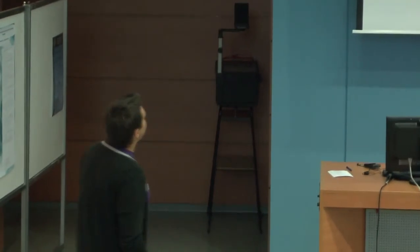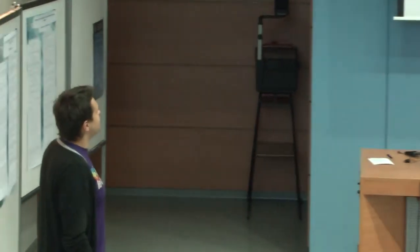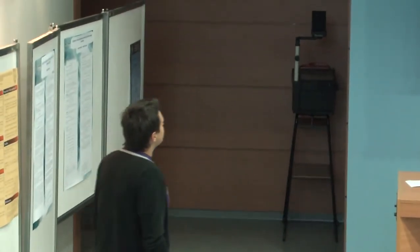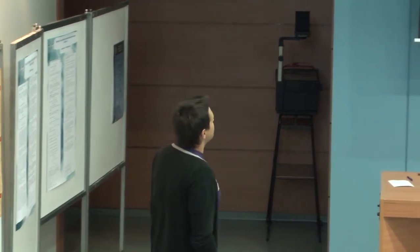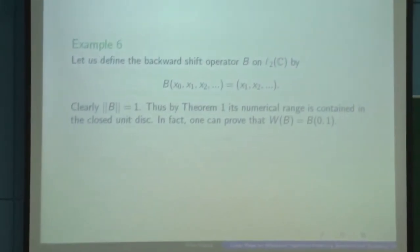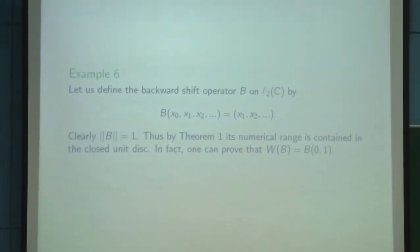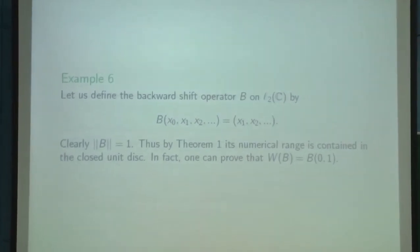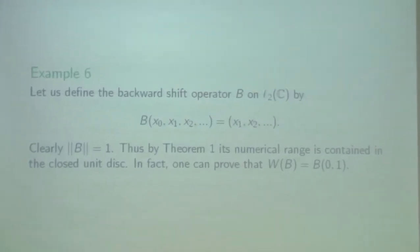Now let us show two examples. First, we consider the backward shift operator, and note that its norm is equal to 1. By theorem number 1, we know that the classical numerical range is contained in the closed unit disk. In fact, one can prove that the classical numerical range is always centered at the origin with radius equal to 1.